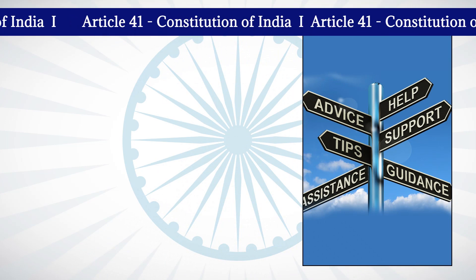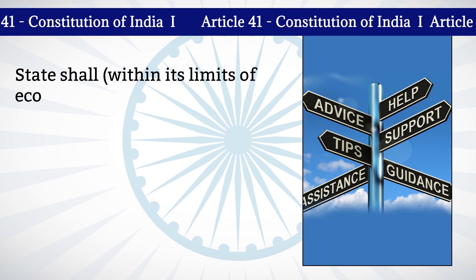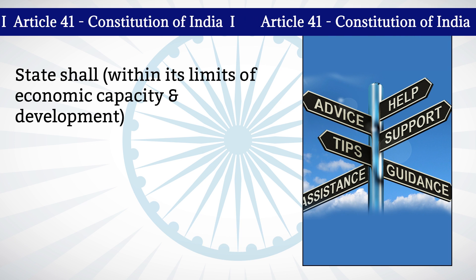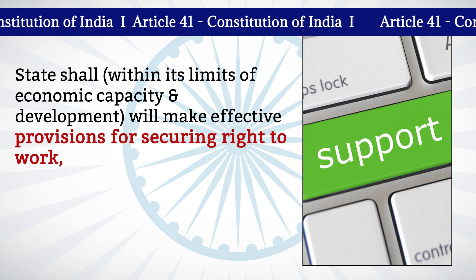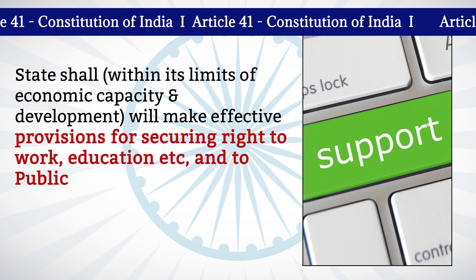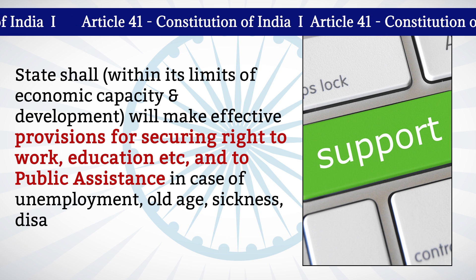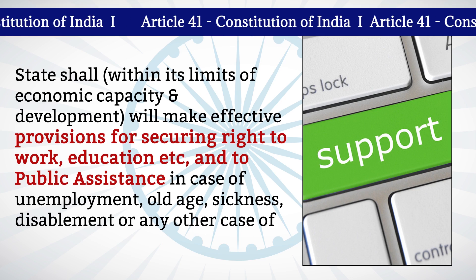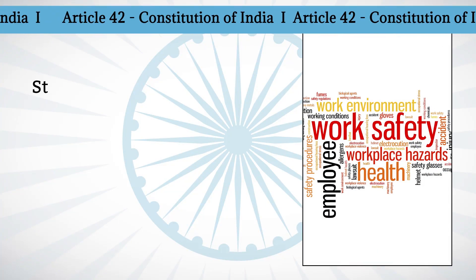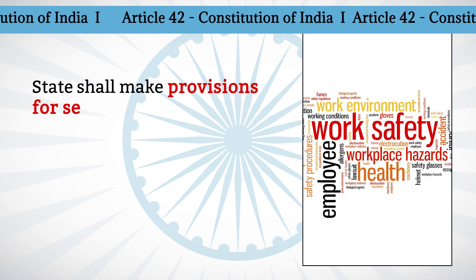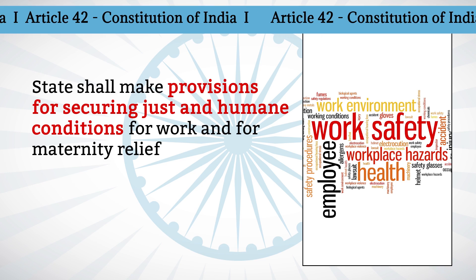Article 41 says that the state shall, within its limit of economic capacity and development, make effective provisions for securing the right to work, education, public assistance in case of unemployment, old age, sickness, disablement, or any other case of undeserved want. Article 42 says that the state shall make provision for securing just and human conditions for work and for maternity relief.